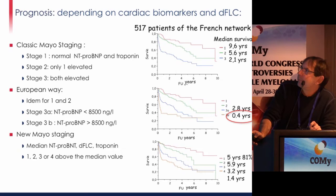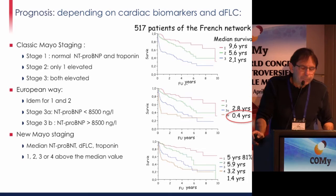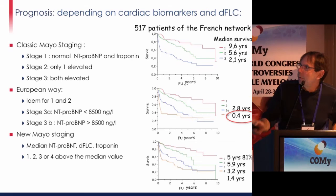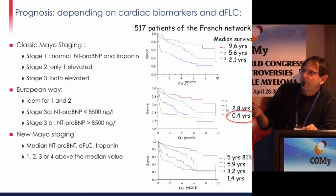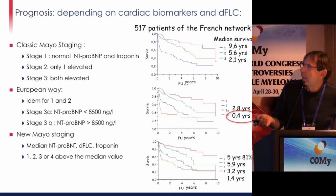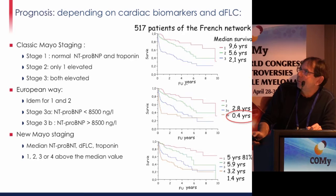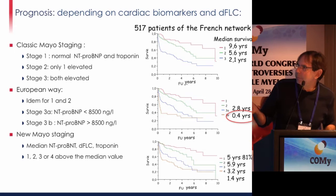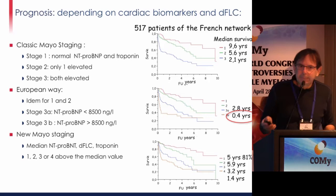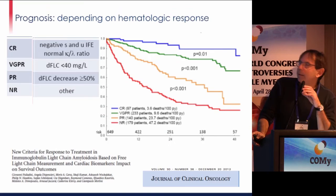What drives prognosis in AL amyloidosis is cardiac involvement and dFLC — the difference between the involved and uninvolved free light chains. We have three staging systems: the classic Mayo staging with NT-proBNP and troponin; the European system with the same stages 1 and 2 but 3A and 3B depending on NT-proBNP value; and the new Mayo staging with NT-proBNP, dFLC, and troponin. Applied to our cohort, all three work well. Patients with very high NT-proBNP do very, very badly.